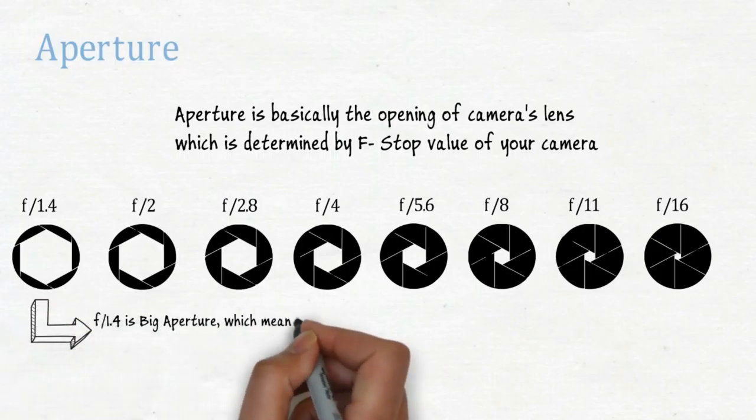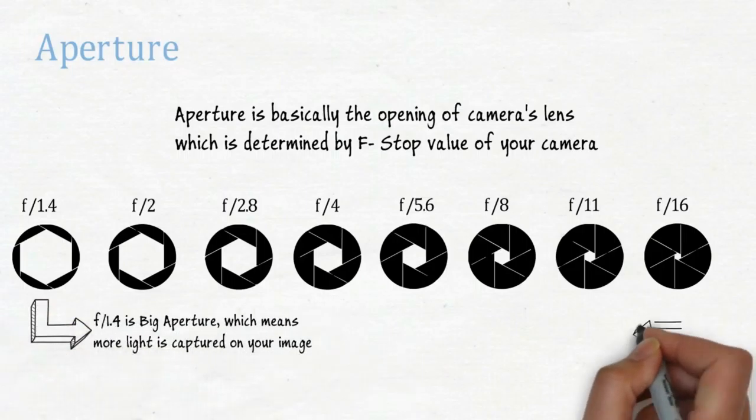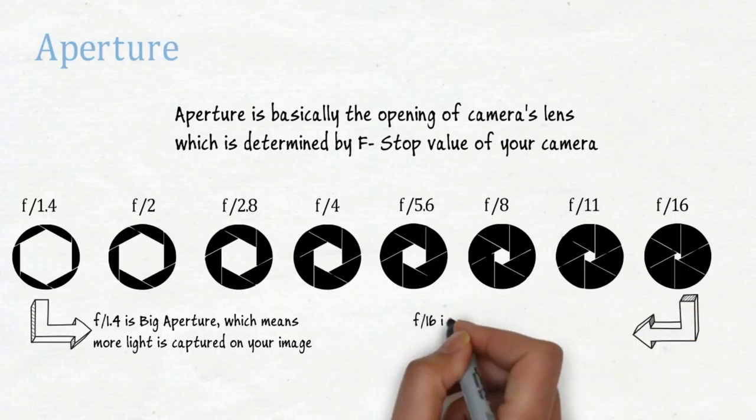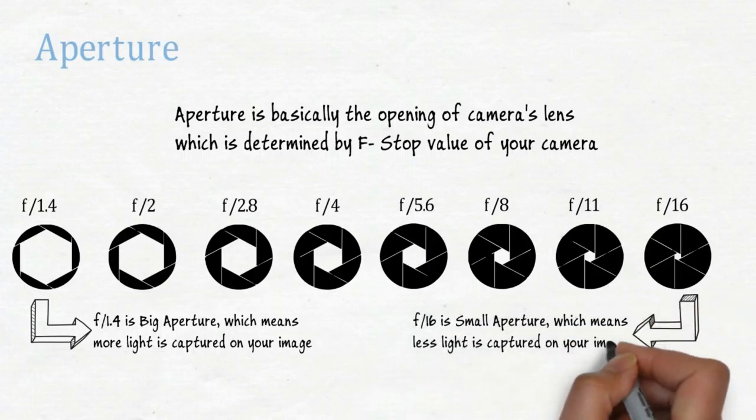F1.4 is a big aperture, which means more light is captured on your image. And F16 is a smaller aperture, which means less light is captured on your image.